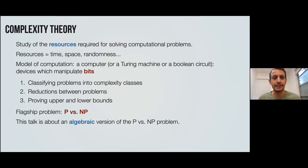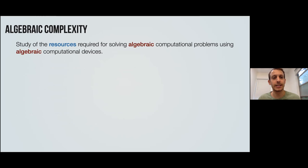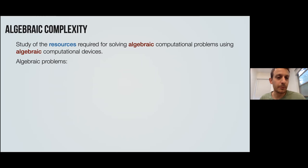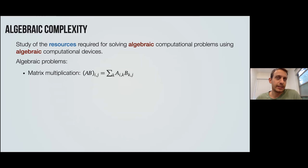Let's state what algebraic complexity is. Analogously, we study the resources required for solving algebraic problems using algebraic devices of computation. Let's give some examples of algebraic problems. Matrix multiplication is one example — we are given two N by N matrices and we want to compute their product. There's no way to overstate the importance of matrix multiplication.